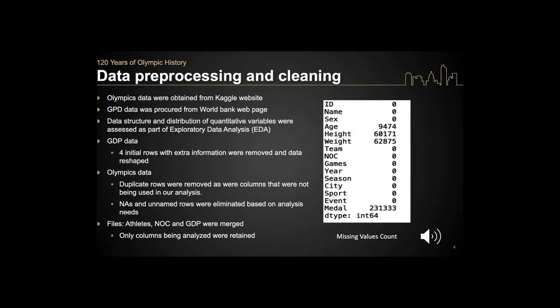As for the GDP data, initial extra information above the column names was removed, and the data was reshaped to facilitate its merge with the other files. For the Olympics data, duplicate rows were removed, and unnamed rows were eliminated as well. Depending upon the need, zero for medal count was converted to no medals. Overall, three files were used: an athletes file with athletic data such as host city, name, height, and sport of participation; an NOC file containing country data; and a GDP file. Only the columns being analyzed were retained.